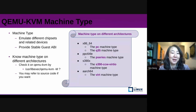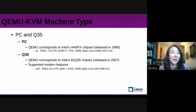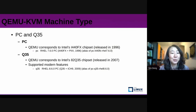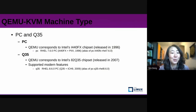Let us have a look at the picture. We can see the machine types on different architectures. In this slide, let us take a close look at PC and Q35 machine types on X86 architecture. QEMU-KVM supports two main variants of machine types for X86: PC and Q35.